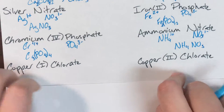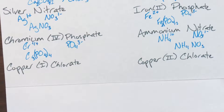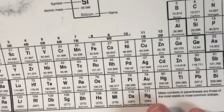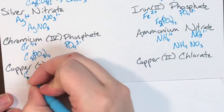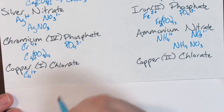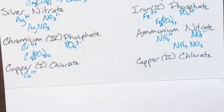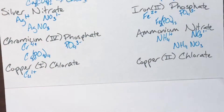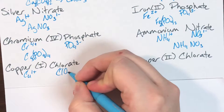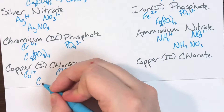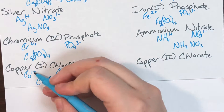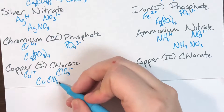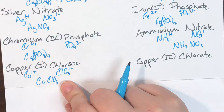Copper(I) chlorate: copper is Cu, element 29, a transition metal. Copper(I) means a charge of positive one. Chlorate, ending in '-ate,' is a polyatomic ion with the formula ClO₃⁻. Exchanging charges for subscripts: copper's 1 becomes chlorate's subscript and chlorate's 1 becomes copper's subscript, but I don't write ones. So CuClO₃ is the final formula for copper(I) chlorate.